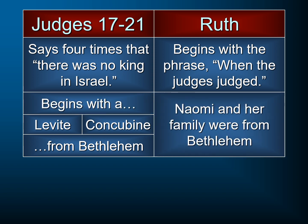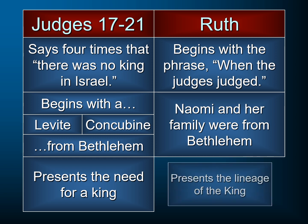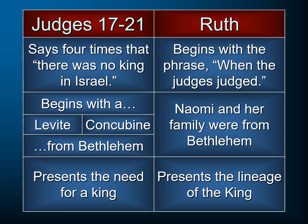In Judges chapter 17, it begins with a story of a Levite and a concubine — they're both from Bethlehem. Likewise, as we open here, we're going to be introduced to Naomi and her family, and they're from Bethlehem. So all three of these stories — the story of the Levite, the story of the concubine, the story of Ruth and Naomi — begin in Bethlehem. In Judges, it presents the need for a king, because there was no king in Israel. As we get to the end of the book of Ruth, it's going to present the lineage of the king.